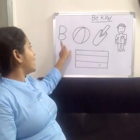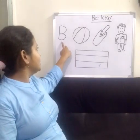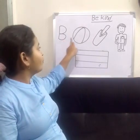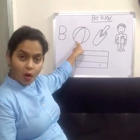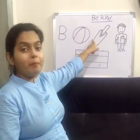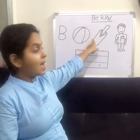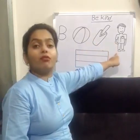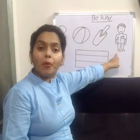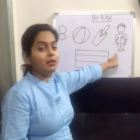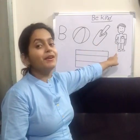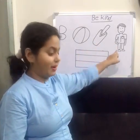So now as you can see, B is for ball, B is for bat, and B is for boy.